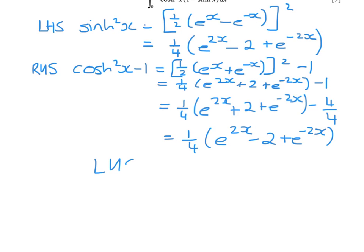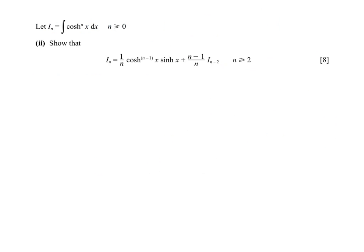That means we can bring the 1 inside the brackets and 2 take away 4 is minus 2, so the left hand side is equivalent to the right hand side. We are now going to let I_n equal the integral of cosh x times cosh to the power n minus 1 of x.